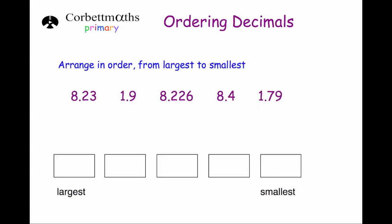Let's have a look at one last example. This time arrange in order from largest to smallest — make sure we're doing largest to smallest. We've got 5 numbers, and some have more decimal digits than others. We'll make them all the same length by adding trailing zeros so they all have 3 digits after the decimal point.